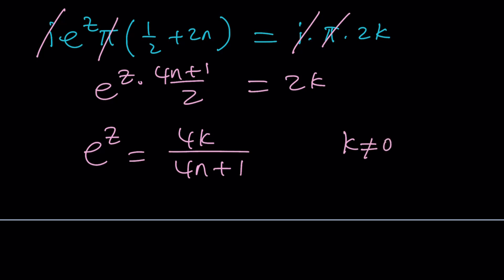Because if k is 0, we get e to the z equals 0, which doesn't even have solutions in the complex world. Does it have any solutions? Negative infinity? No. Not in any world as far as I know. So k doesn't equal to 0.